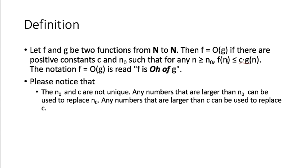The same logic applies to c. Suppose your c equals 10: if f(n) less than or equal to 10 times g(n), then you can replace 10 by 100, so f(n) less than or equal to 100 times g(n) — that's also okay. Since the function values are positive integers, replacing c by a larger c keeps the inequality true.